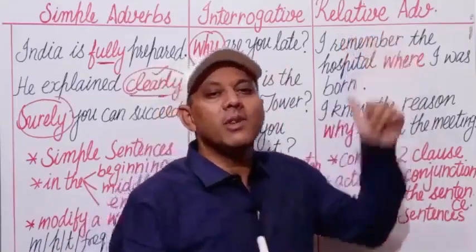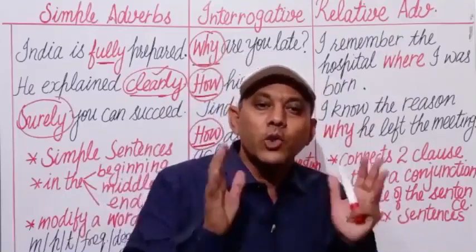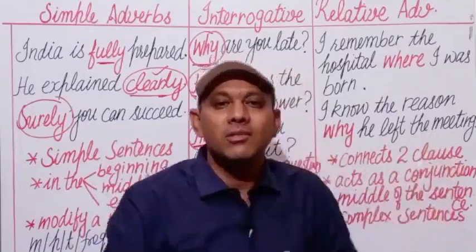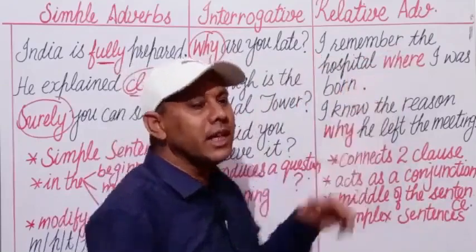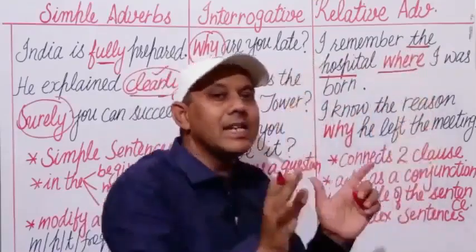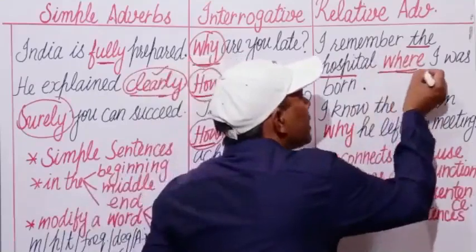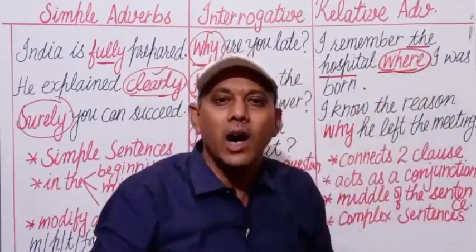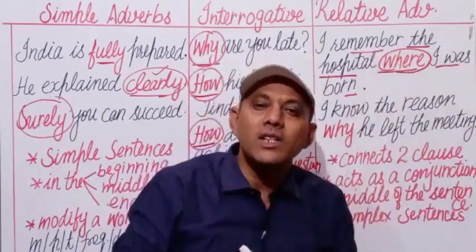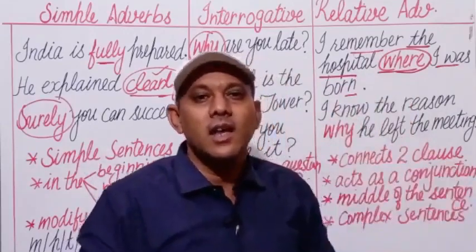A relative adverb not only modifies a word in a sentence but is also used as a conjunction to join two clauses and refers back to a noun. For example: 'I remember the hospital where I was born.' The antecedent is 'the hospital,' and 'where' is used as a relative adverb joining the two clauses.